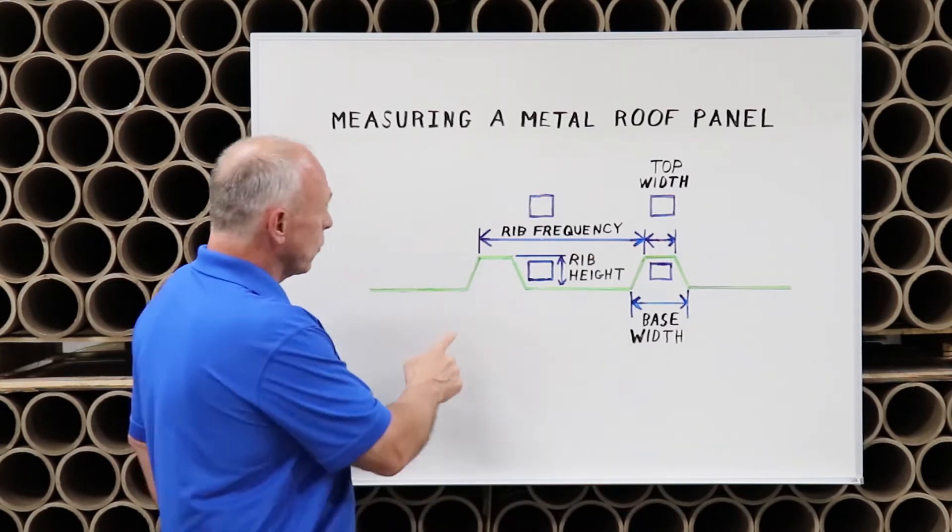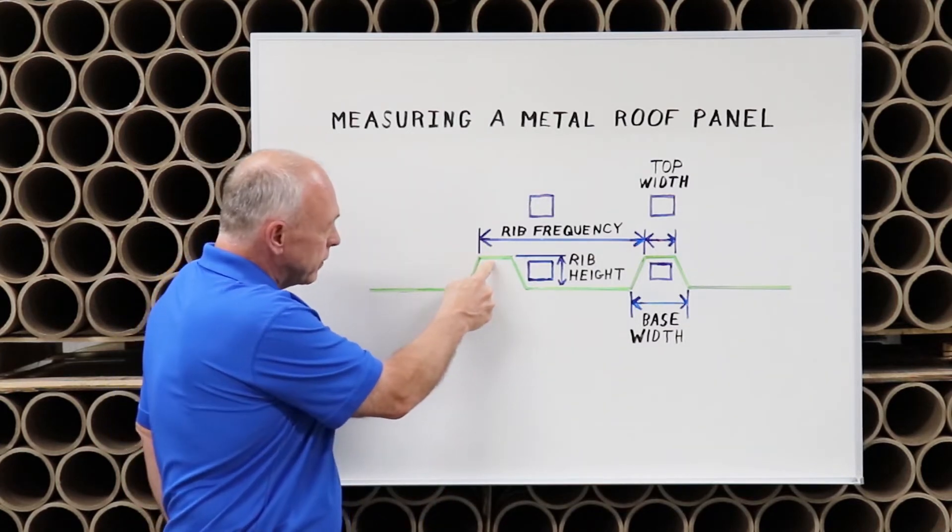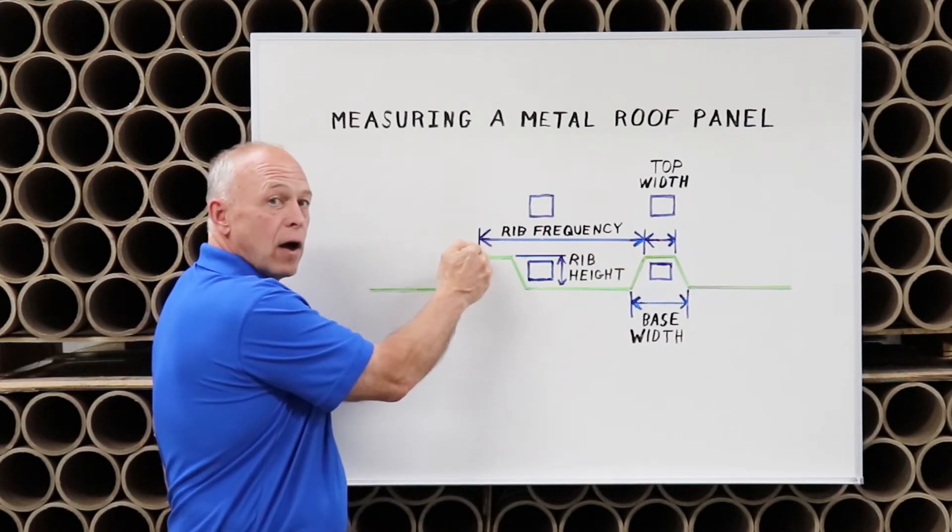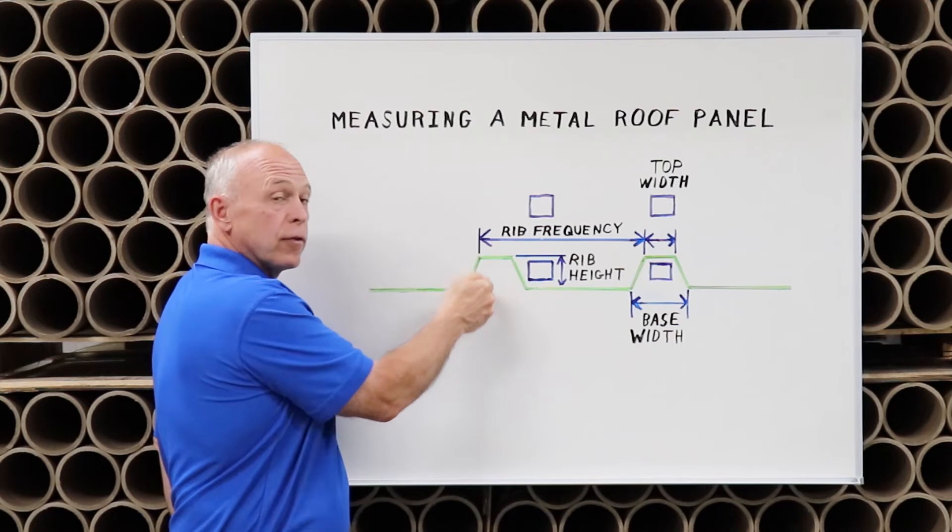First is the rib height, the vertical distance from here to here. This is not the distance of the angle, but rather the vertical distance.